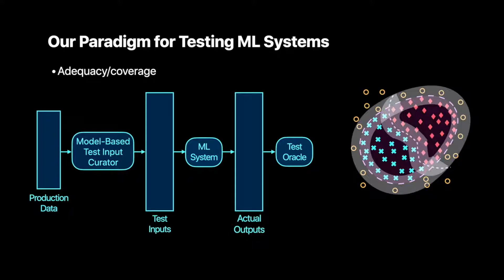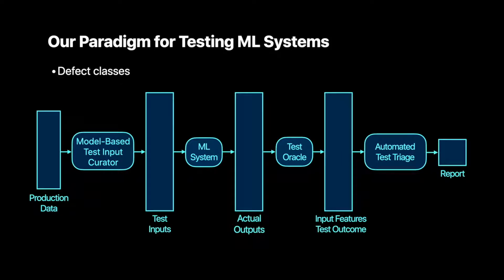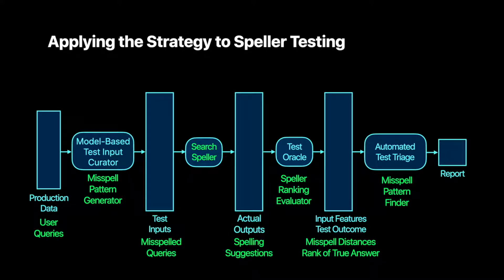With sufficient coverage, we will obtain potentially millions of test results. That's why it is necessary to have an automatic test triaging system that looks at all test outcomes and reports defect classes instead of individual test failures. This can be done through predefined aggregations or automated clustering, which we describe in depth in our paper. We also describe how we achieve each step with Speller testing.